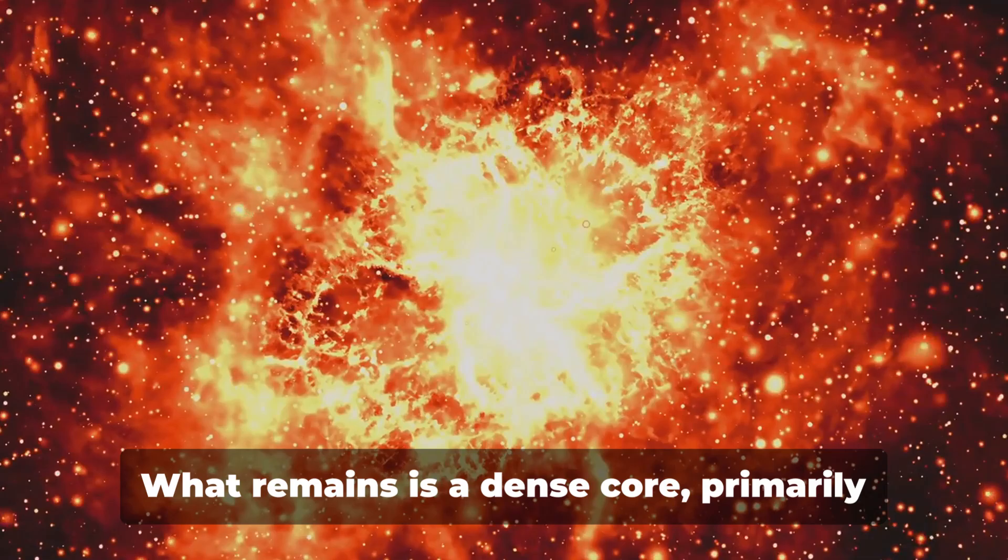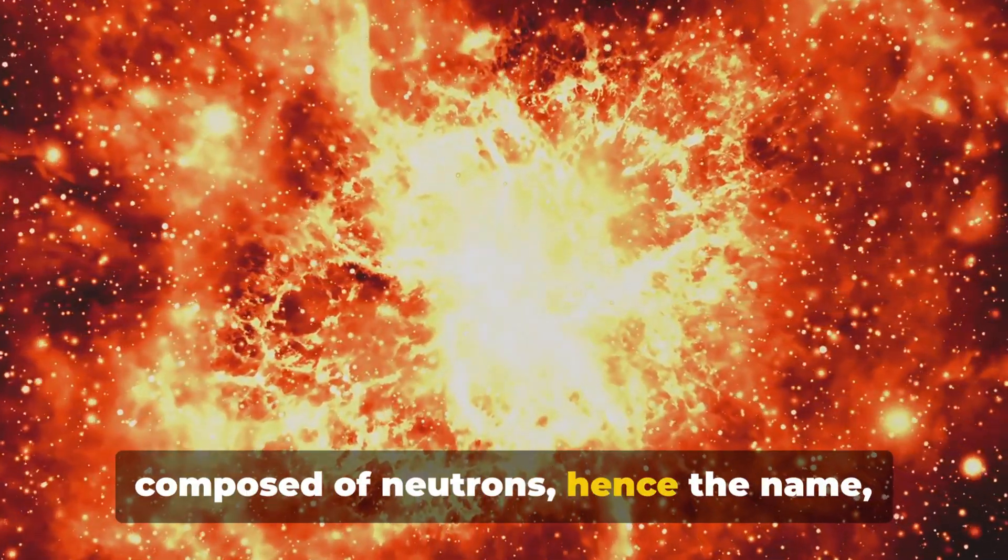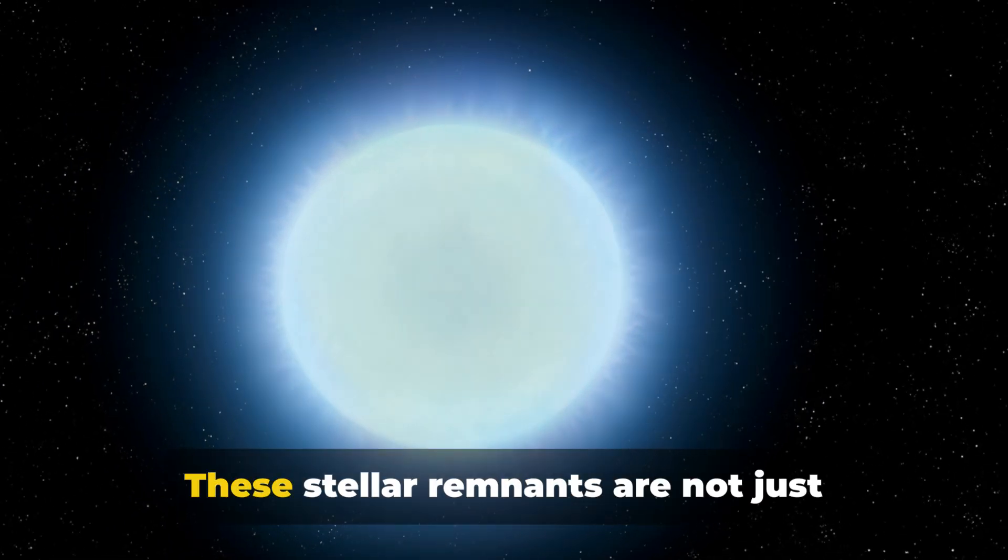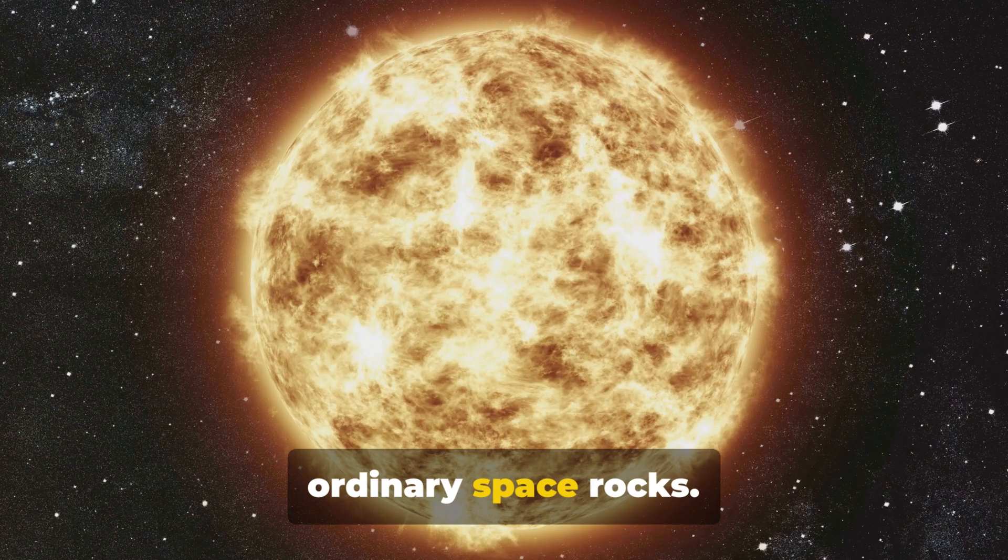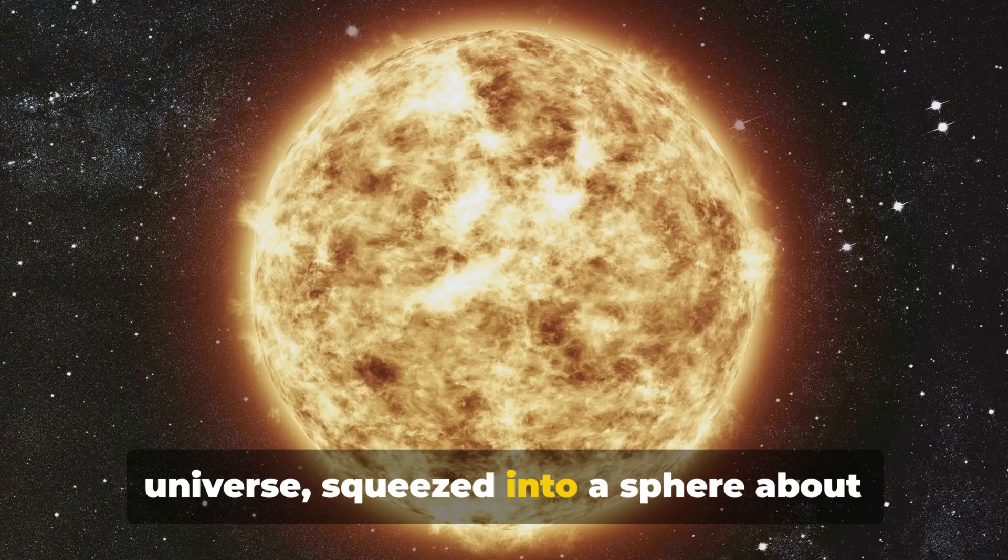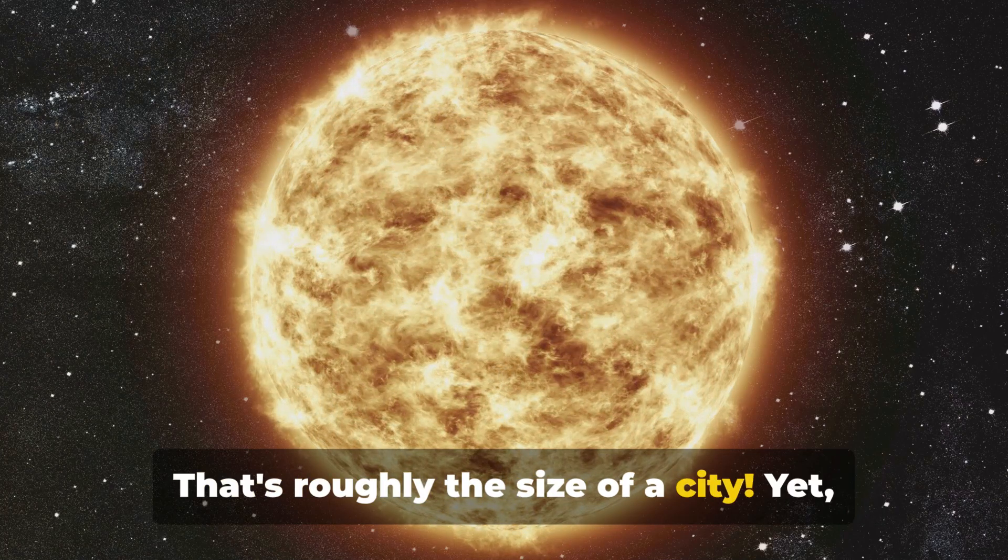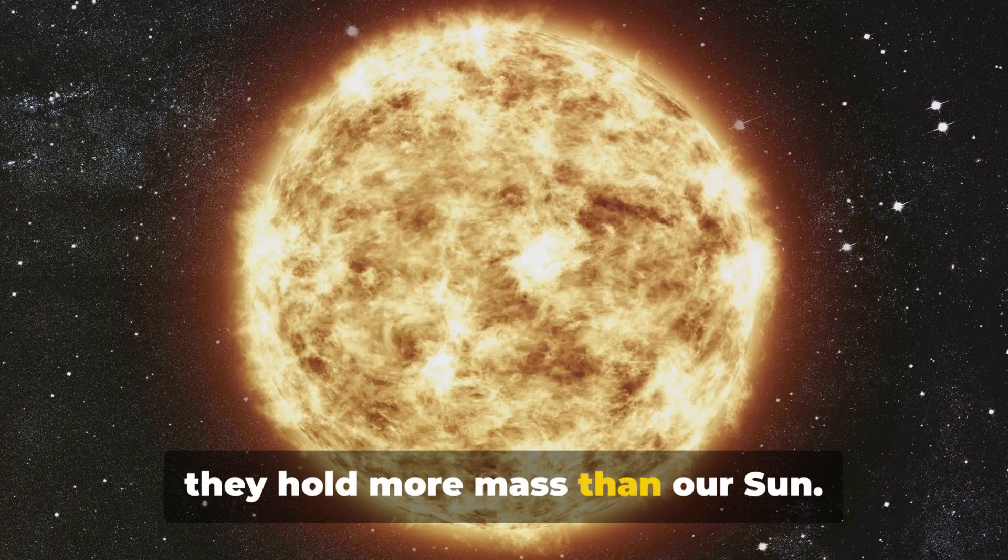It explodes and casts off its outer layers. What remains is a dense core primarily composed of neutrons, hence the name neutron star. These stellar remnants are not just ordinary space rocks. They are among the densest objects in the universe, squeezed into a sphere about 20 kilometers across, roughly the size of a city, yet they hold more mass than our sun.